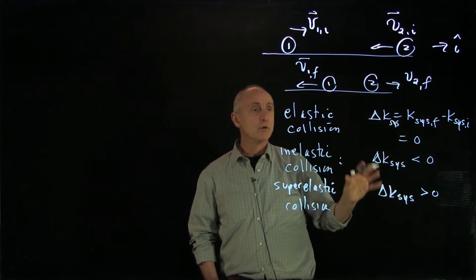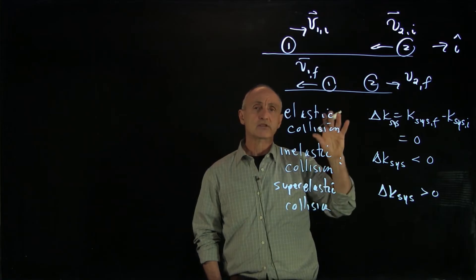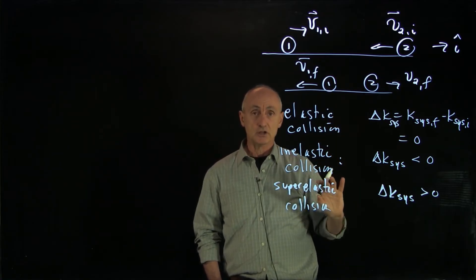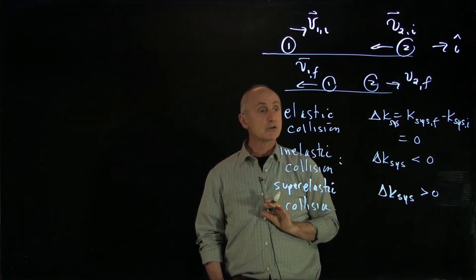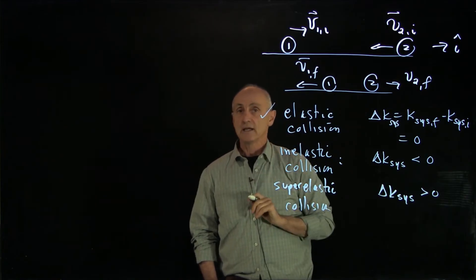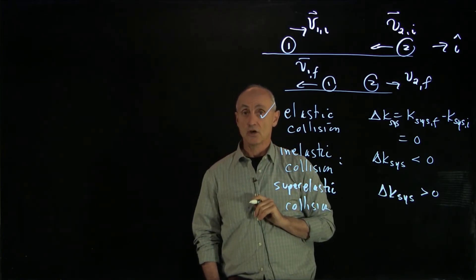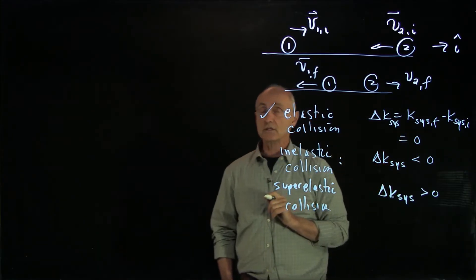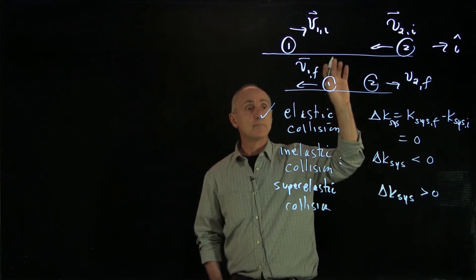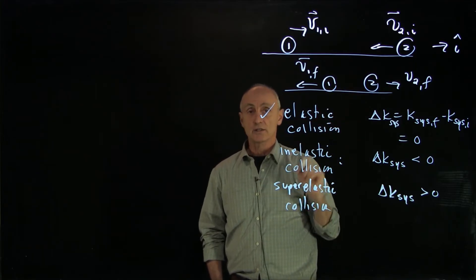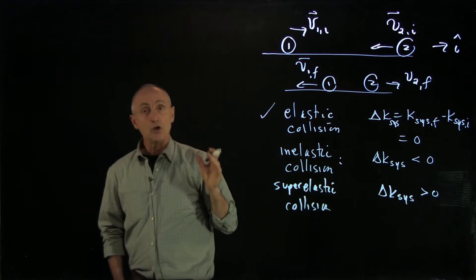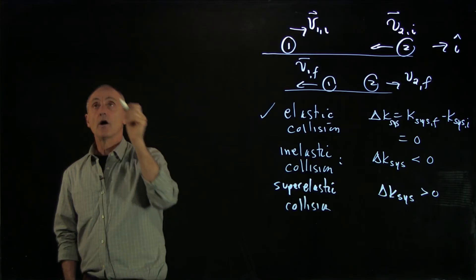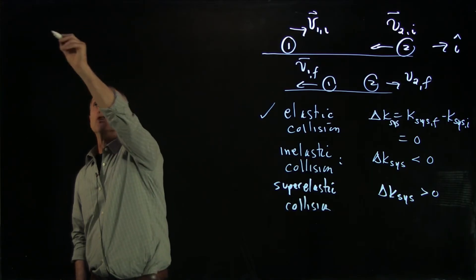To make a model of our problem, we have to beforehand make assumptions about the nature of the collision. For our particular collision, let's assume the collision is elastic. So we have two conservation principles: the kinetic energy of the system is constant, and because there's no external forces, the momentum of the system is constant. Now we can write down our kinetic energy condition.